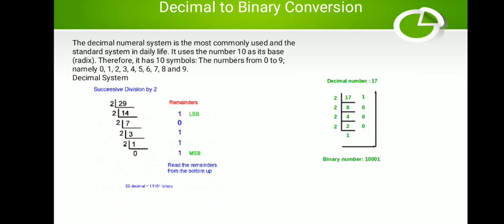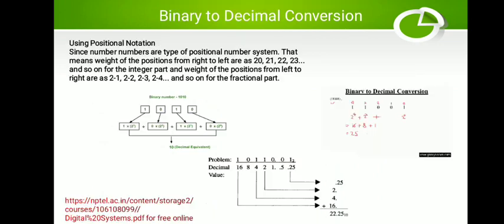Next is conversion from binary to decimal — finding the equivalent decimal number of a given binary number. When you represent a decimal number, you have units place, 10s place, 100s place, 1000s place and so on. Similarly, you can find the decimal equivalent of a 2-bit, 4-bit, 16-bit, or n-bit binary number.